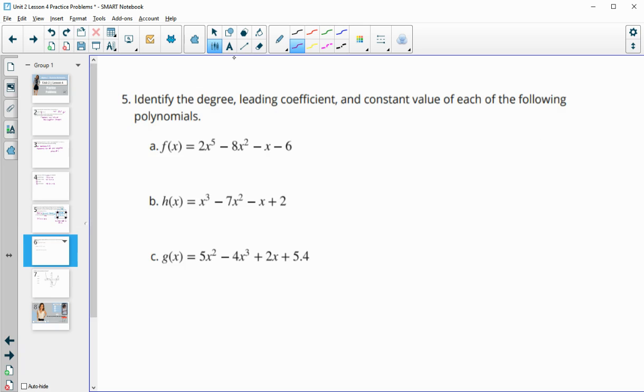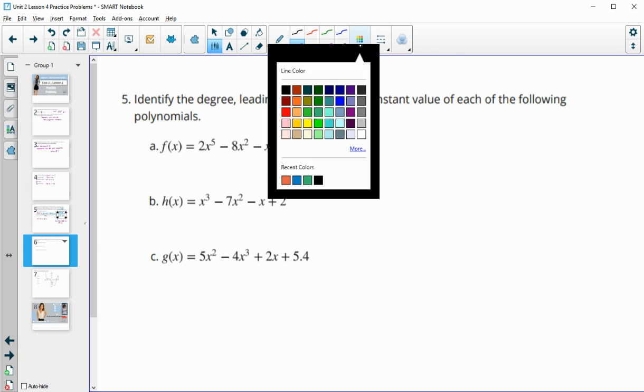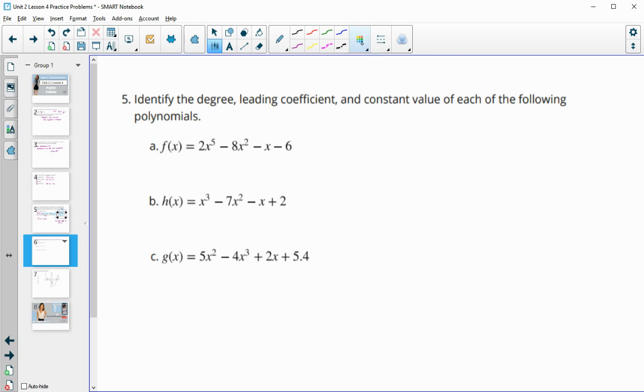Number five: identify the degree, the leading coefficient, and the constant for each of these. The degree is the highest exponent that you see. Let's find the degree of all of these first. We see that here in this term - the degree is five. In this polynomial, we see it here as a three. And in this polynomial, it's here as a three.